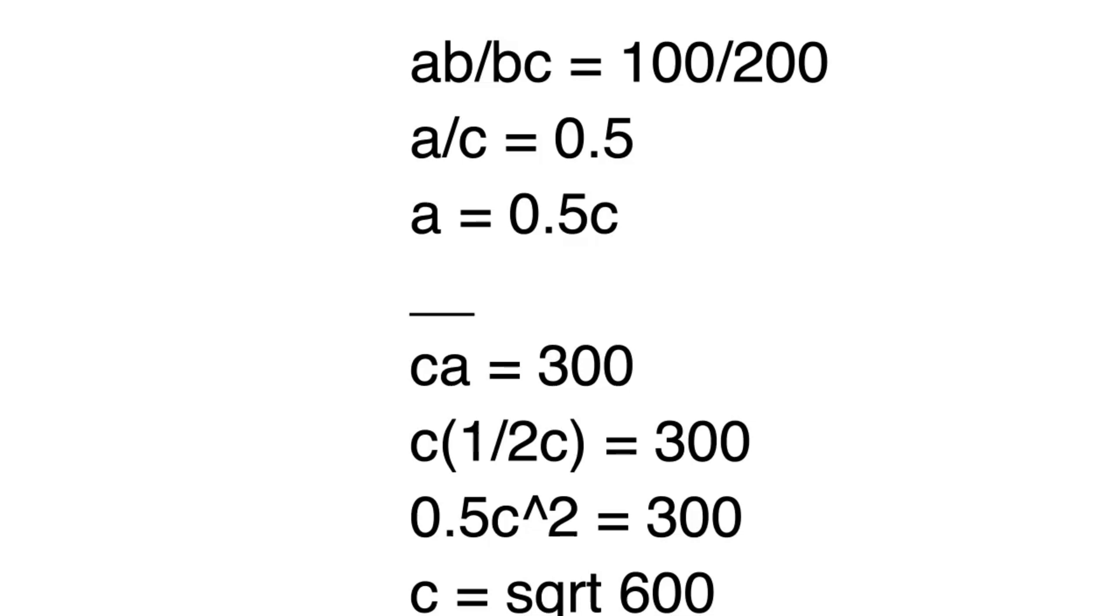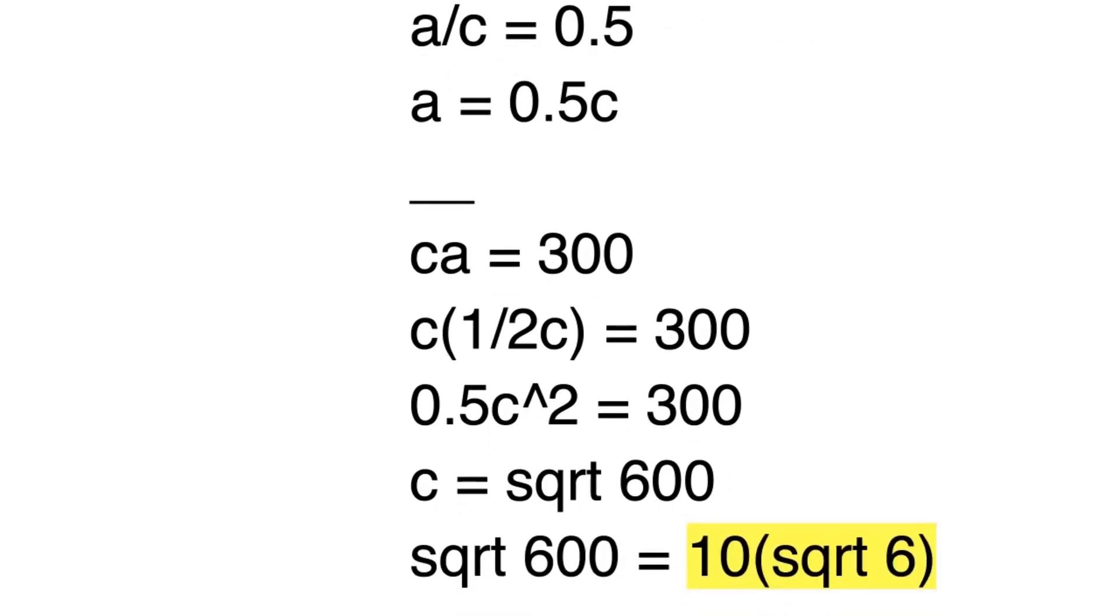We get 600 equals C squared, and then just take the square root of both sides. Square root of 600 simplifies to 10 times square root 6.